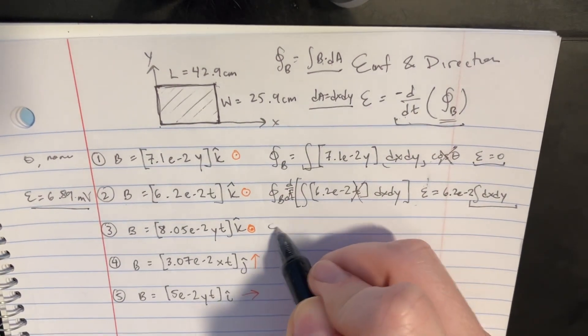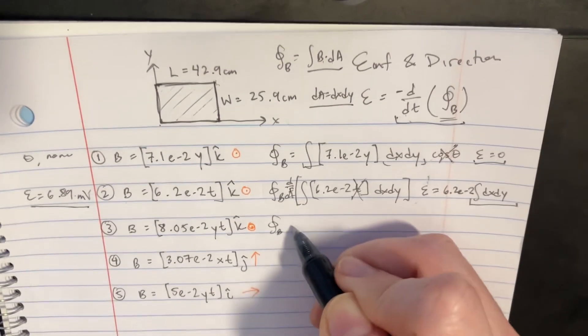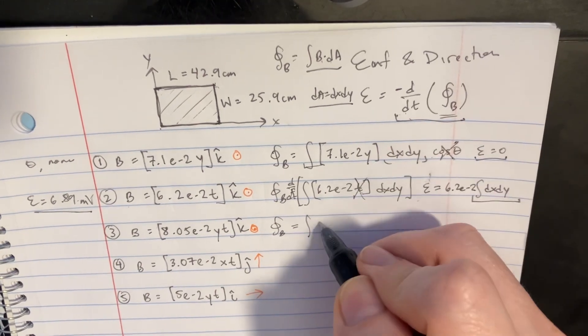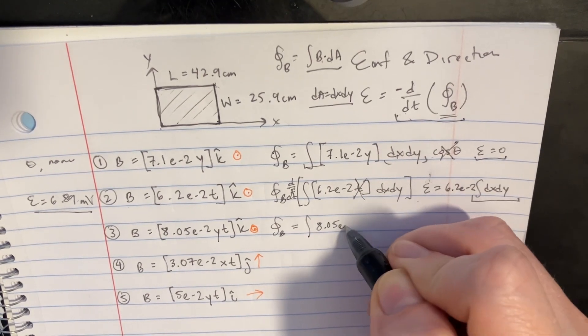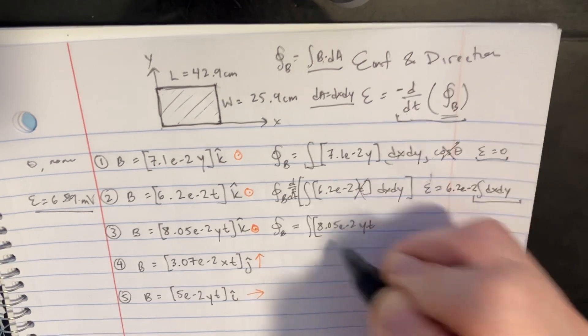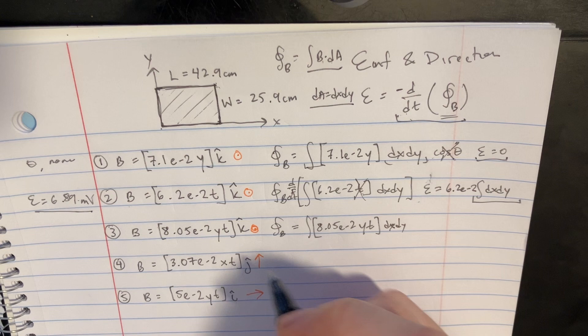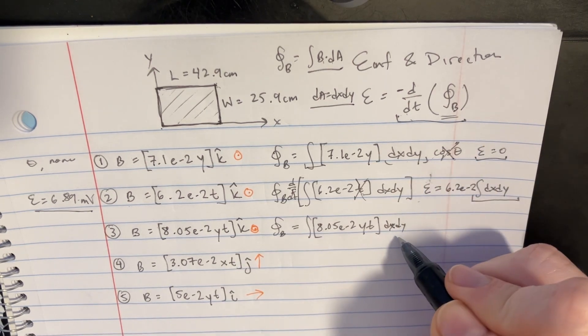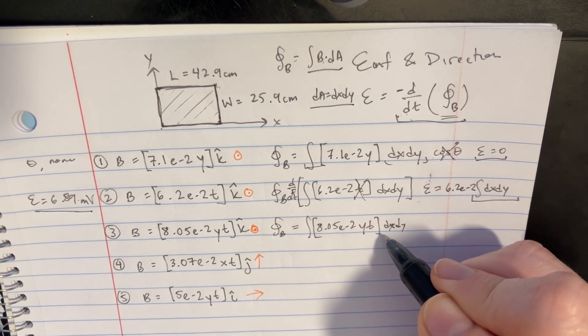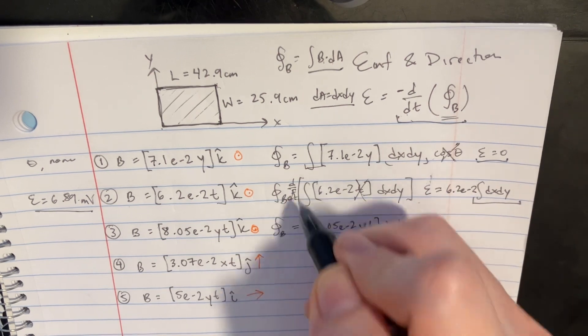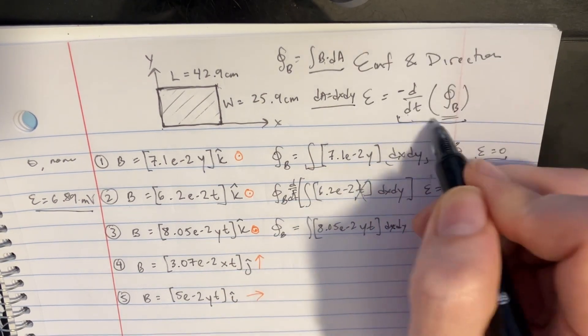So on to the next one. This would be setting it up: equals 8.05 negative 2 yt. Then we have the dx dy. This is still cosine of 0, which is 1, so that's kind of gone. Now, when we take the derivative here, so we're going to take the derivative next.